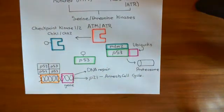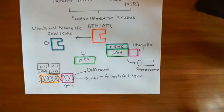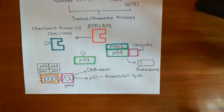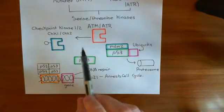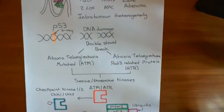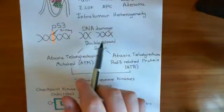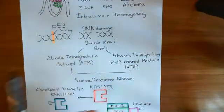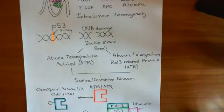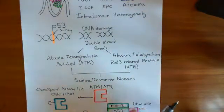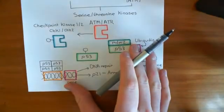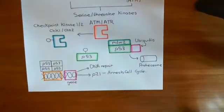Arresting the cell cycle is sensible. If you have a cell with damaged DNA, you do not want it going through division — firstly because it risks passing mutations to daughter cells, and secondly it risks chromosomal havoc. For example, if you have a double strand break, serious problems could occur at mitosis when sister chromatids should be pulling apart. Arresting the cell cycle is therefore a good idea.